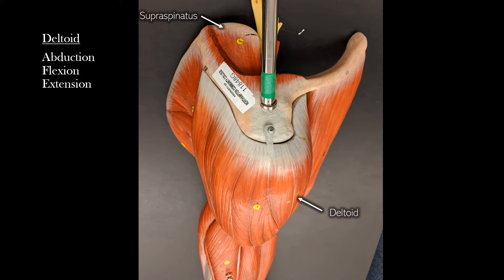Above the spine of the scapula is a muscle called the supraspinatus. The supraspinatus has an insertion point on the superior aspect of the head of the humerus, which is why it also causes abduction.